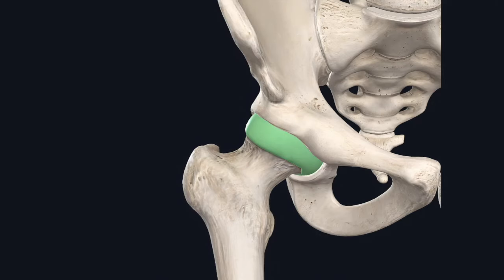The normal hip functions as a ball and socket joint. The femoral head — the ball — articulates with the acetabulum, the socket, allowing a smooth range of motion in multiple planes. Any condition that affects either of these structures can lead to deterioration of the joint, which in turn can lead to deformity, pain, and loss of function. The most common condition affecting the hip in this way is osteoarthritis.